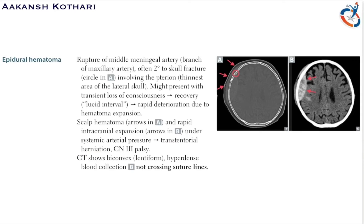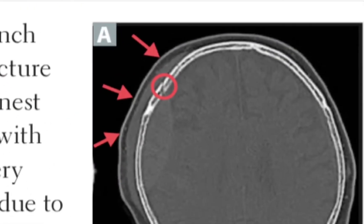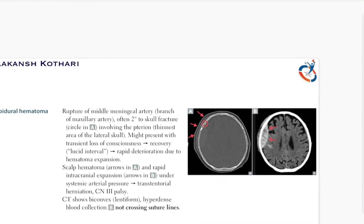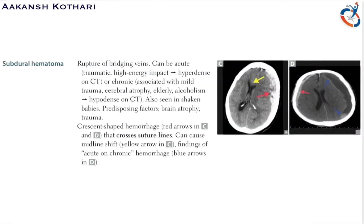On CT scan, epidural hematoma is seen as a biconvex lentiform hyperdense blood collection that does not cross the suture lines. In the diagram, the pterion is visible — skull fracture at this location can lead to epidural hematoma.